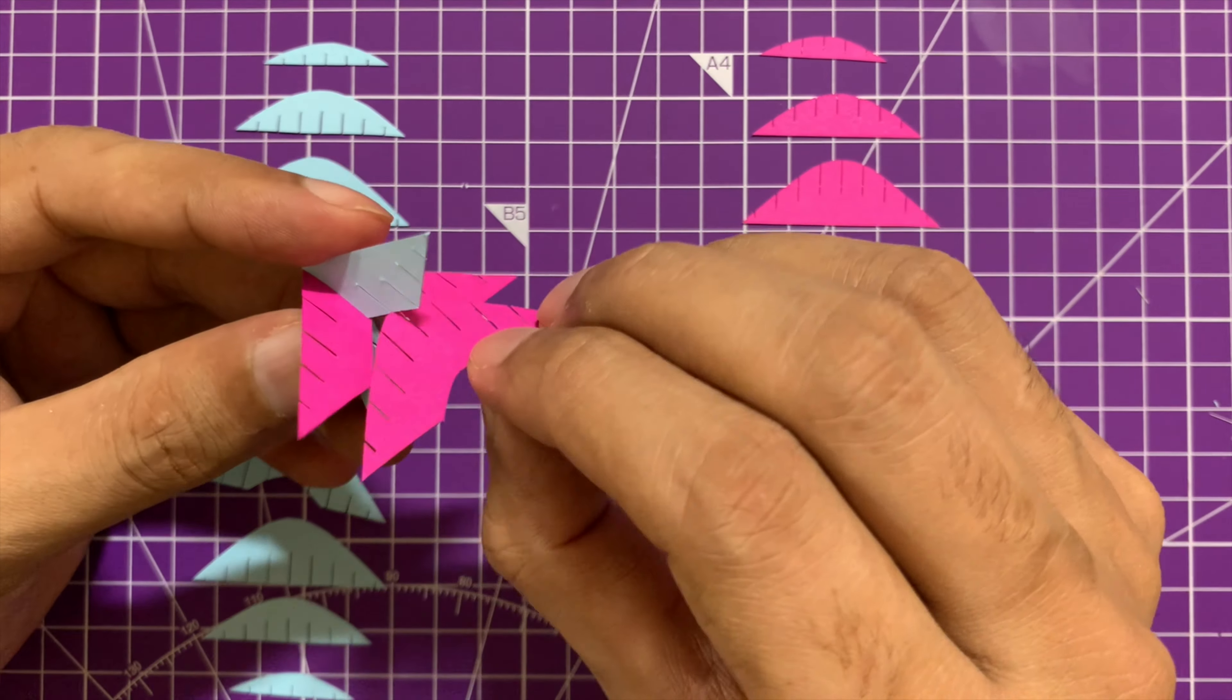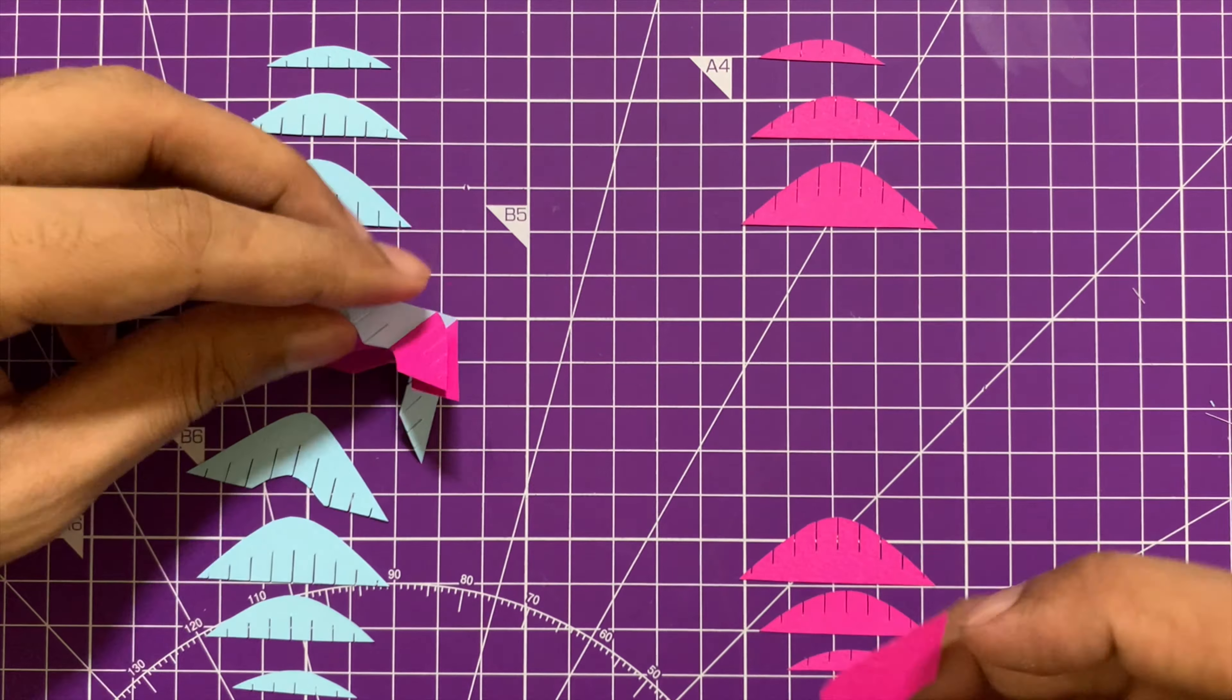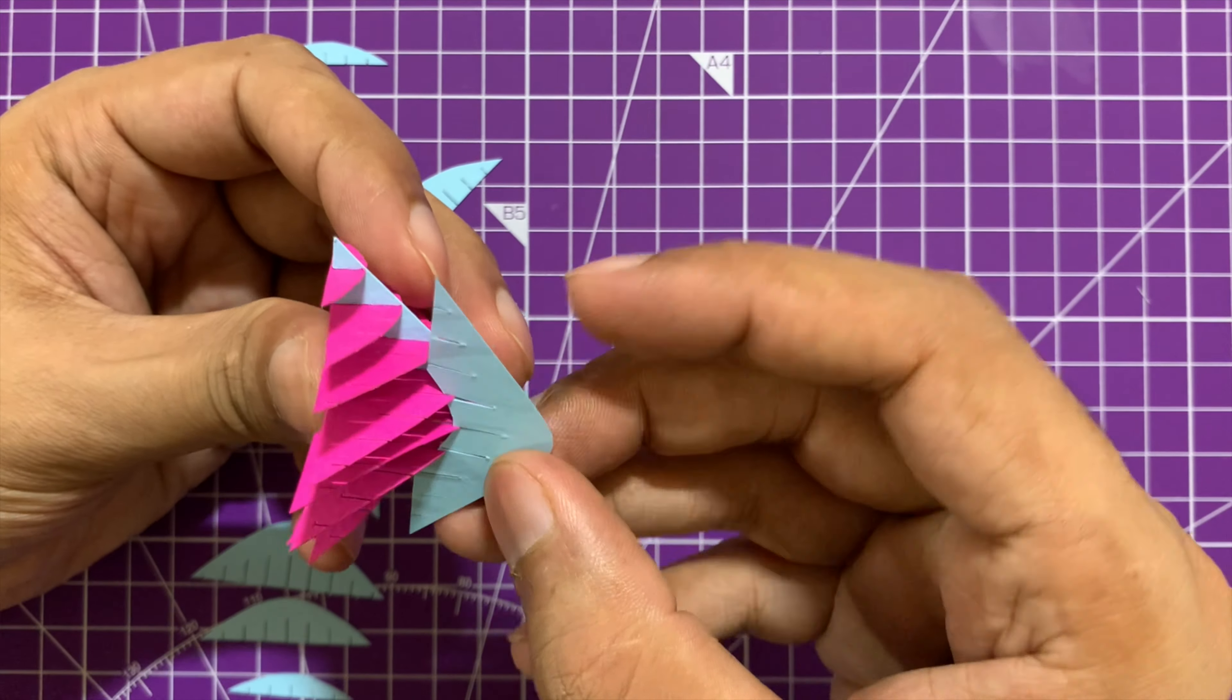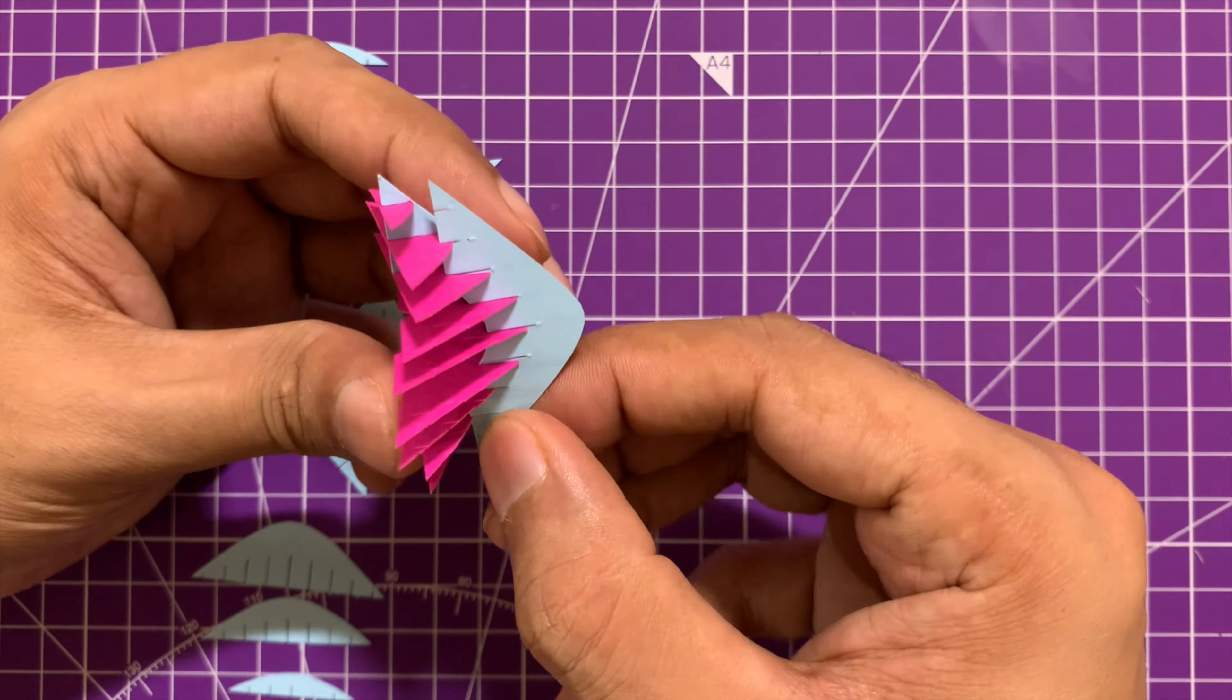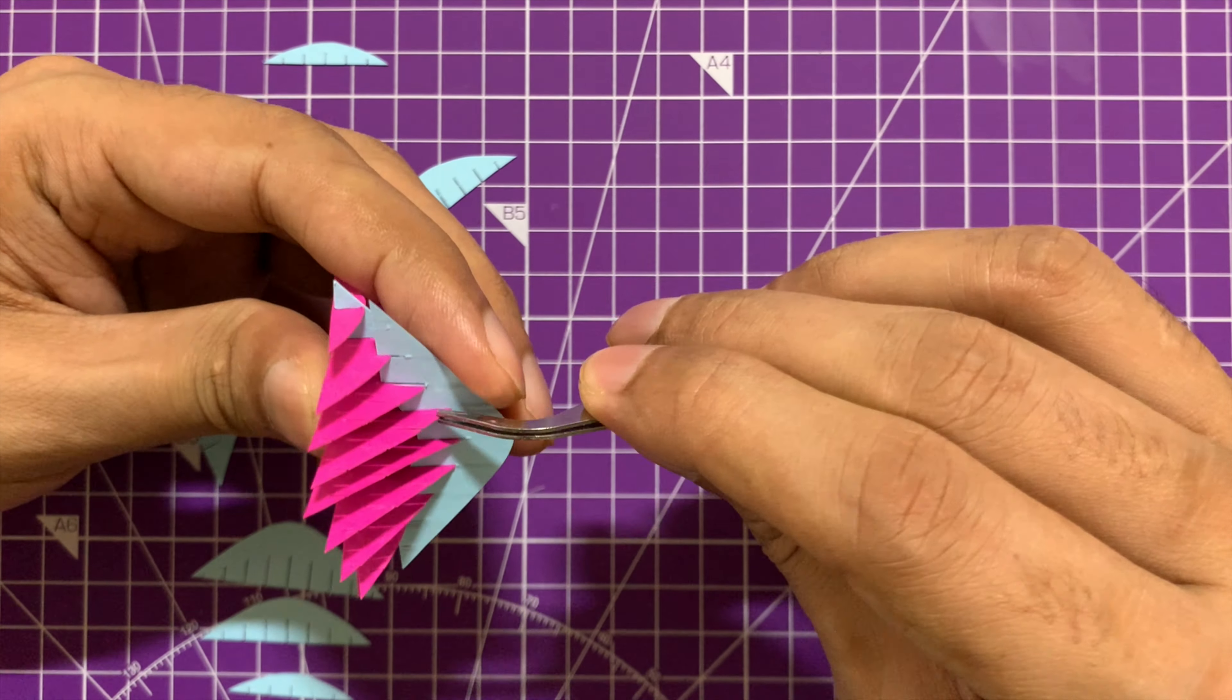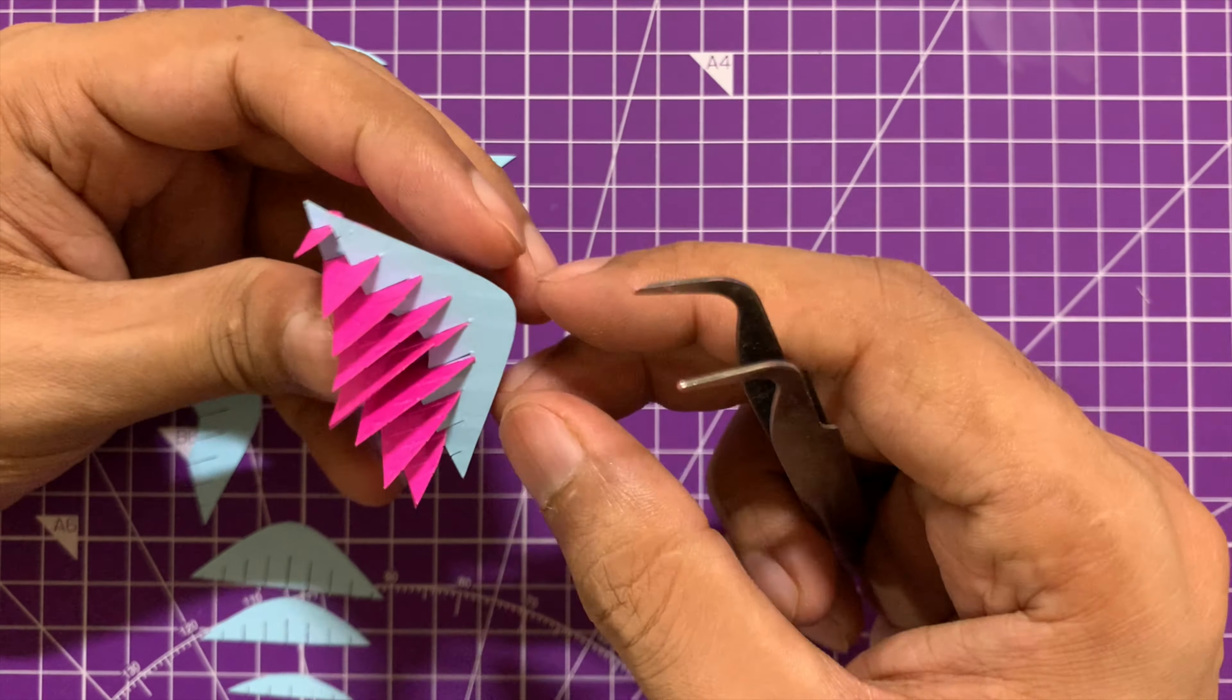Once you are done with the center pieces then pick up one of the planes first and keep on assembling the pieces on the center piece of the other plane one by one. And once you are done with that then pick up the pieces of the other planes and try to assemble them on the pieces of the previously assembled plane that you have already completed.